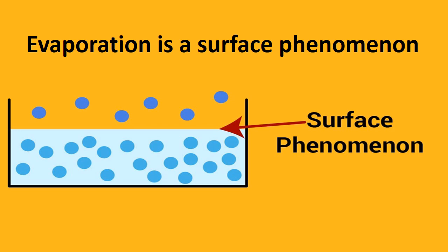Evaporation is a surface phenomenon. The molecules present on the surface of the liquid will take energy from the surroundings, and definitely their kinetic energy will increase which makes them vibrate more strongly and lead them to escape from the liquid. As evaporation is a surface phenomenon, it can take place at all temperatures below boiling point.